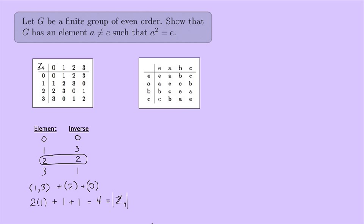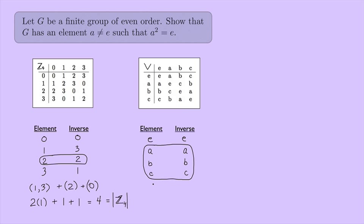Let's look at another example: the Klein 4 group, represented with a V. We look at the elements and inverses: E, A, B, and C. The identity equals its own inverse. In this case, A is the inverse of A, B is the inverse of B, and C is the inverse of C. So aside from the identity, all other elements also equal their own inverse. That's 1+1+1+1 = 4, which is the order of the Klein 4 group.